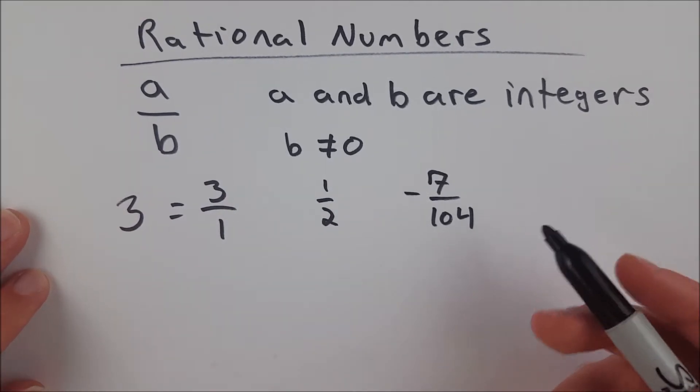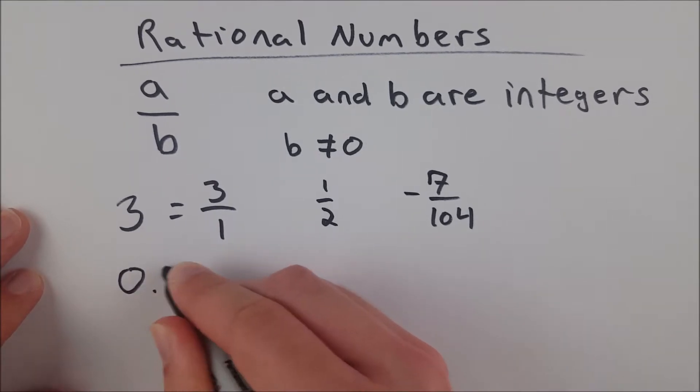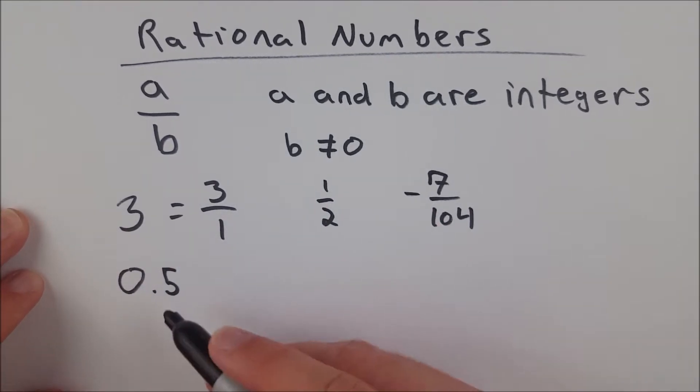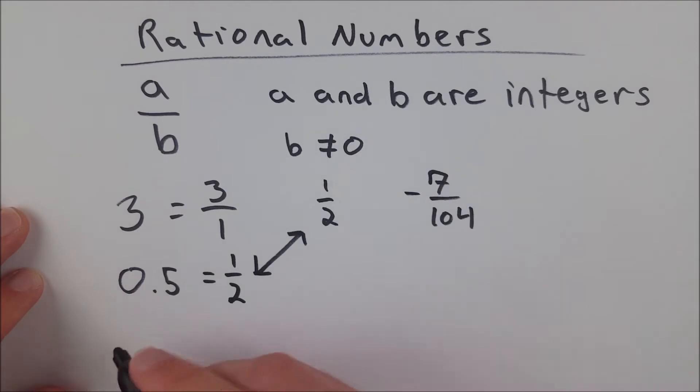And that's really all there is to it. If we look at numbers in decimal form, like 0.5, we know that this number is a rational number because it is equal to 1 half. Like I said, 1 half, of course, is a rational number. It fits the definition.